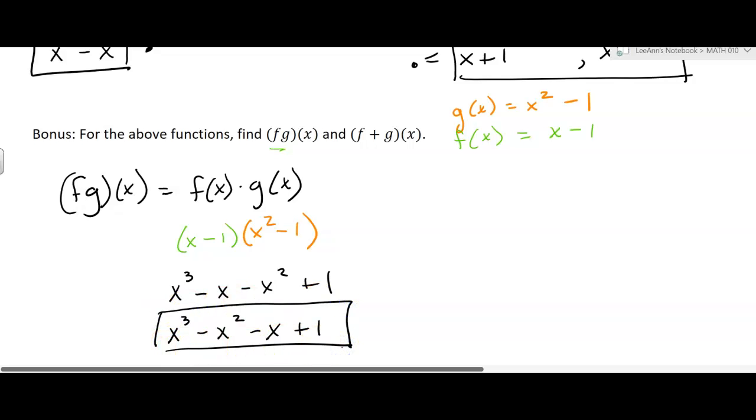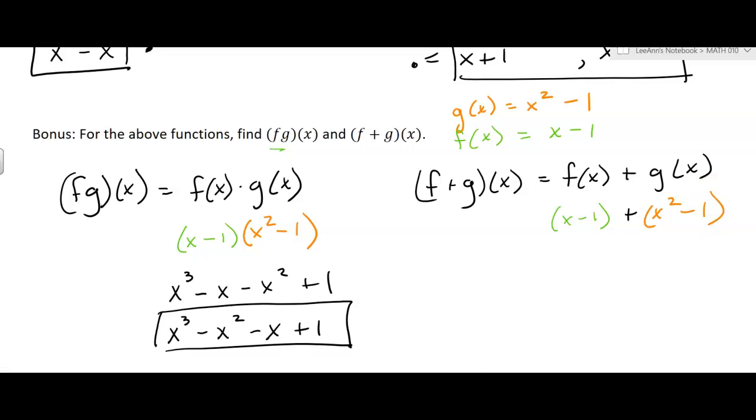Okay, and then the other one is addition. So f plus g of x. That's going to equal f of x plus g of x. And so in our case, we're going to get x minus 1 plus x squared minus 1. And then if I simplify that, let's see.